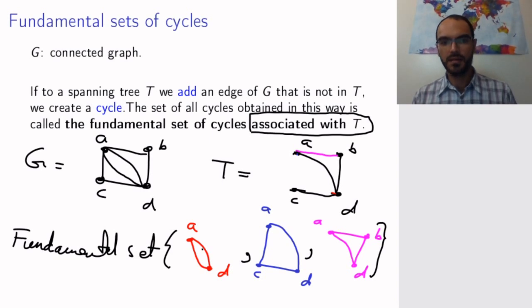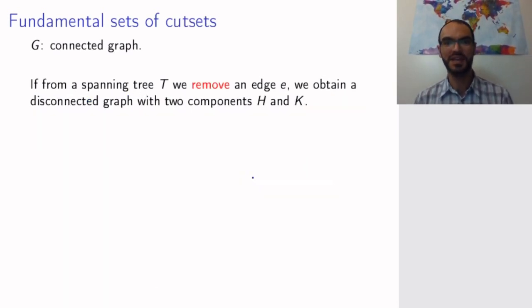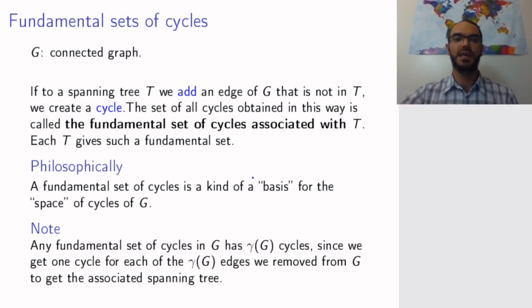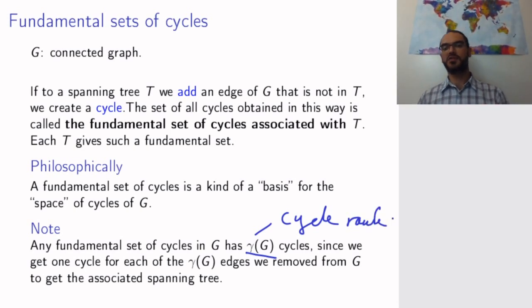Why is that? Well, in order to obtain T from G, we removed these three edges, the purple edge, let me draw them back, the red edge, and the blue edge. And adding each such edge gives me one of these cycles. So, I will have as many cycles in my fundamental set as there are edges that I removed to get a tree. But remember, there is a name for this number. Well, it's three, but there's a different name for three in this case. And that name is the cycle rank. So, this is the cycle rank. The cycle rank is precisely the number of edges we remove to construct the tree. So, for each such edge, we get one cycle in our fundamental set.